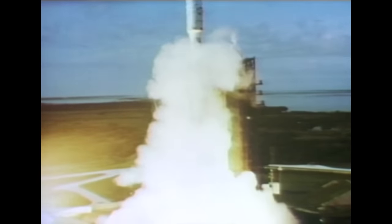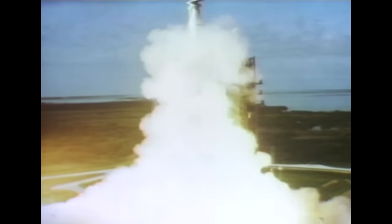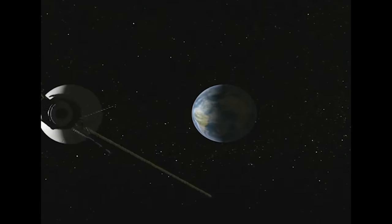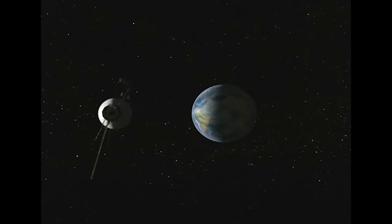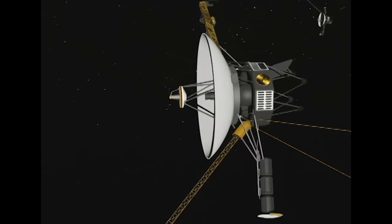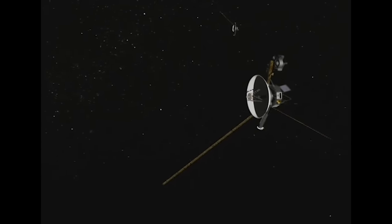Late in the summer of 1977, a historic mission of exploration was launched. Twin spacecraft, christened Voyager 1 and 2, broke free from the Earth's gravity on journeys to the outer reaches of the solar system.